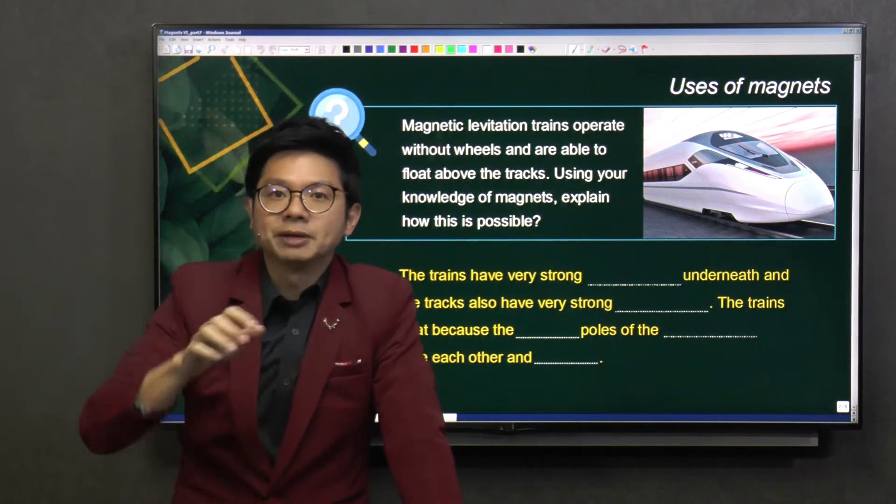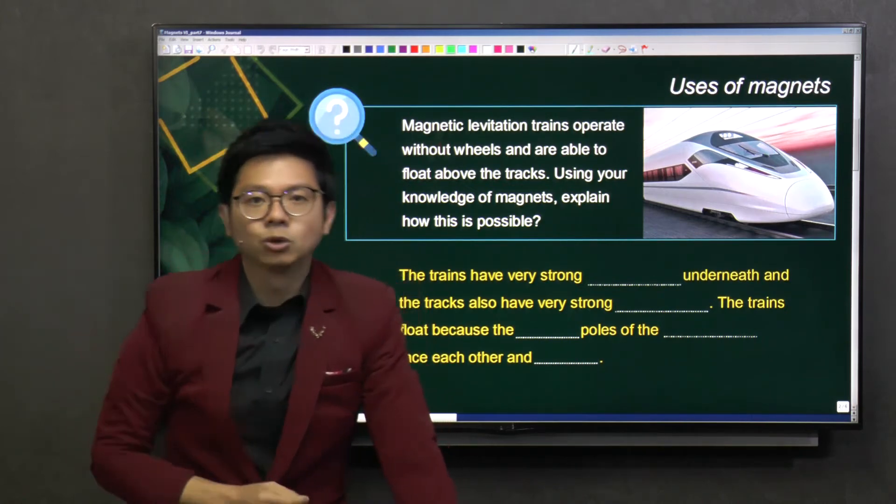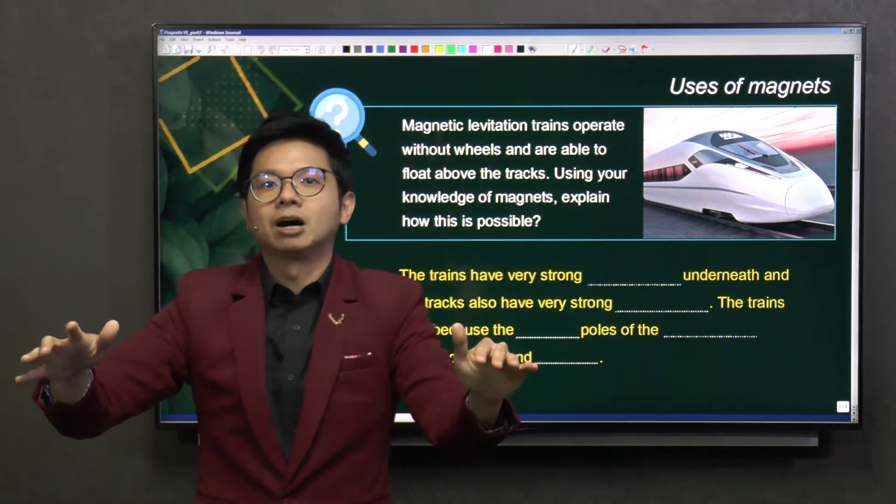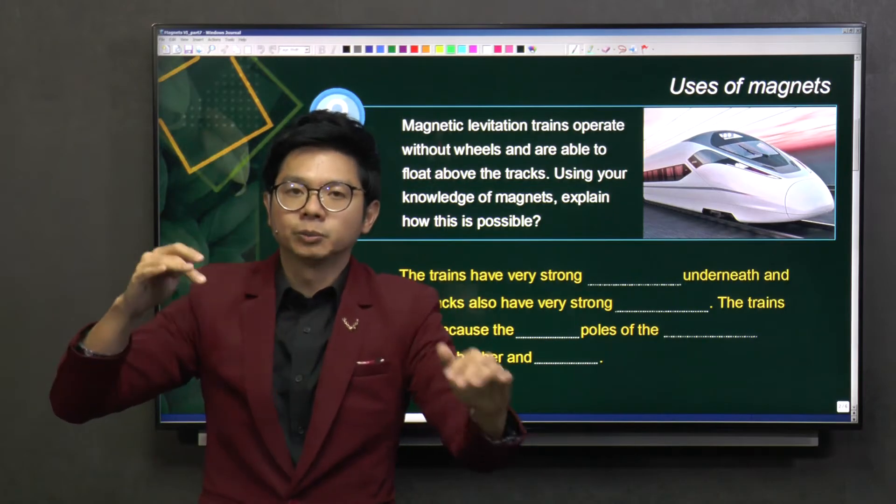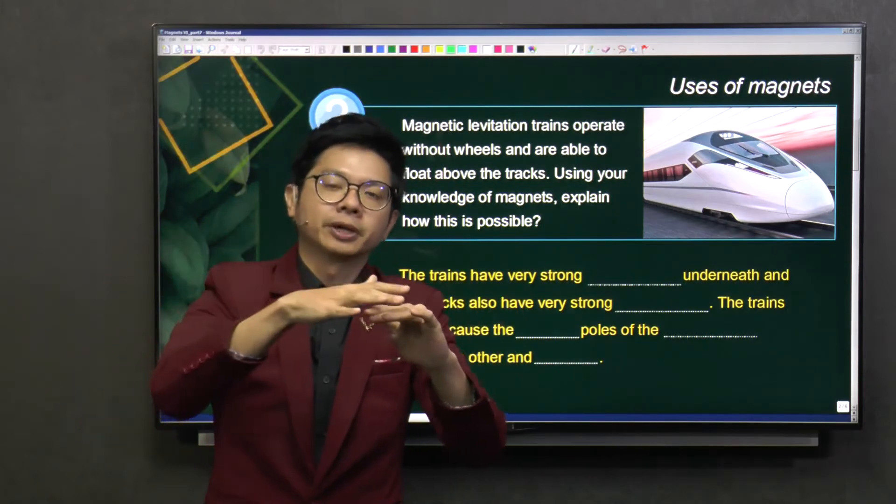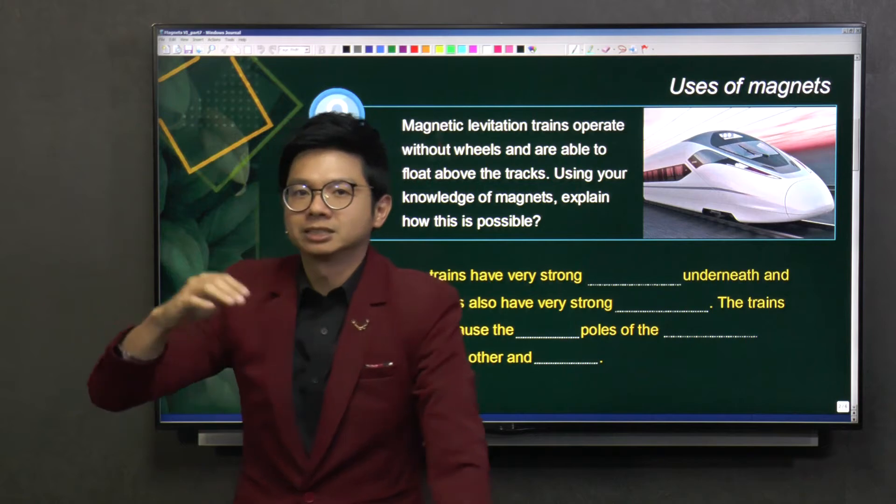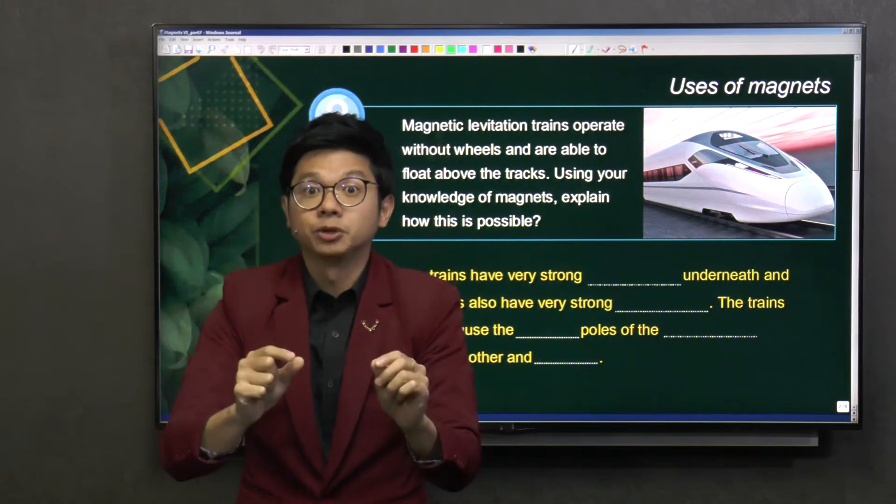Can you guess what is the speed for a Maglev? It can go up to 300 km per hour. So that is much faster than our MRT train. We call this a high-speed rail, so you can travel to places that are far away in a shorter period of time.